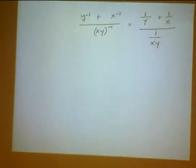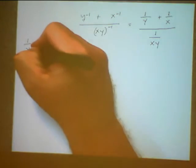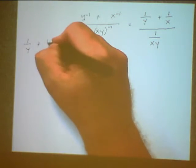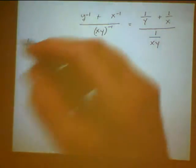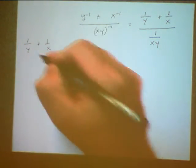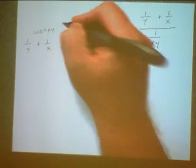So I'm going to have to go off to the side and actually add together one over y plus one over x. So now we have to remember how to add fractions. We don't have the same denominator. We have to find the LCD, which would be xy.